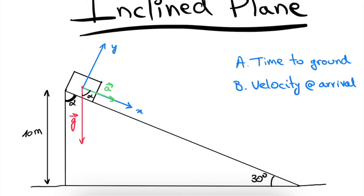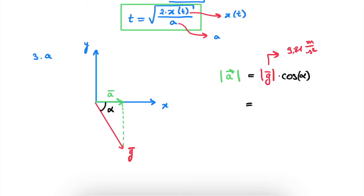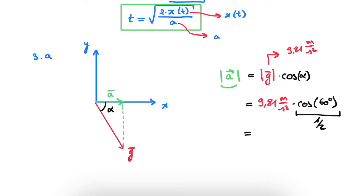Going back to our initial drawing, angle alpha equals the upper-left angle of our triangle — exactly because we chose the x-axis parallel to the surface of the inclined plane. Since the inclined plane makes 30 degrees with the ground, and the right angle is 90 degrees, the total sum of angles in a triangle is 180 degrees, so alpha = 180 − 90 − 30 = 60 degrees. Therefore a = 9.81 × cos(60°) = 9.81 × 0.5 = 4.905 m/s².